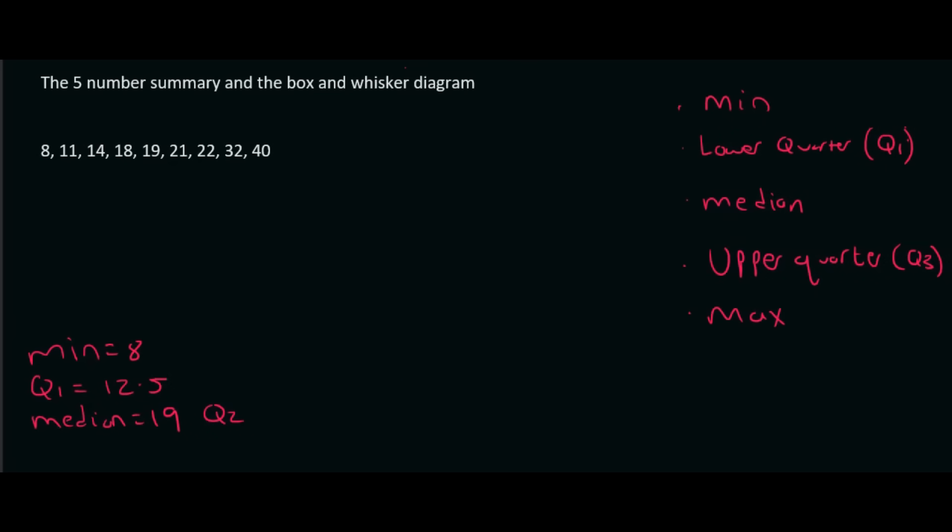Now we're going to find the upper quartile. So that's n plus 1 over 4, so you divide it into quarters, but then you times that answer by 3. So that's going to be 3 times by 9 plus 1 is 10, 10 divided by 4. If you do that on the calculator, you get 7.5. So you go to position 7.5, so that's 1, 2, 3, 4, 5, 6, 7.